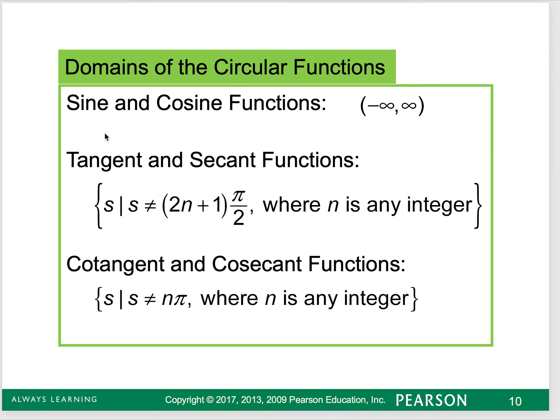As we begin to get into graphing, we're going to start looking at the domain and the range. Sine and cosine have a domain of all real values. I could plug anything in, any angle in between negative infinity and infinity and get an answer. But tangent and secant don't have that behavior, because they have values where they're undefined.